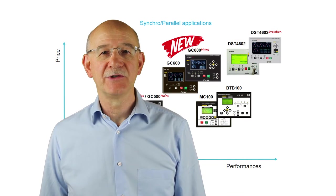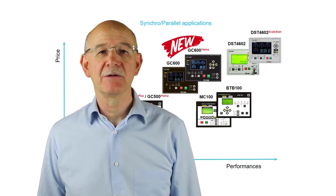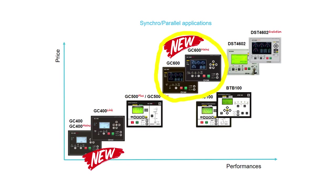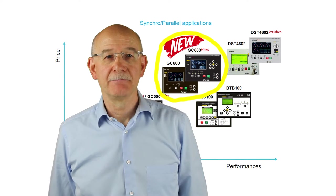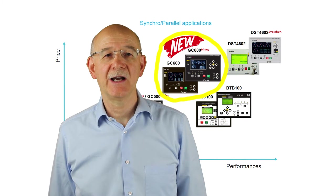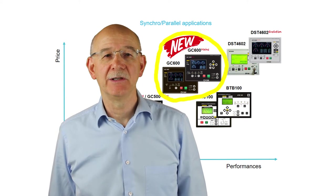Here we can see how the GC600 is related, as price and performance, to the other controllers of ours. Remember that in parallel application, GC600 can work together with any of our parallel controllers, including NC100 and BTB100.